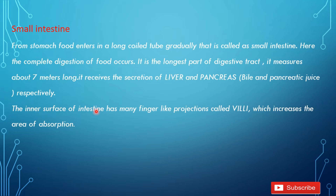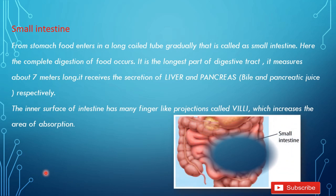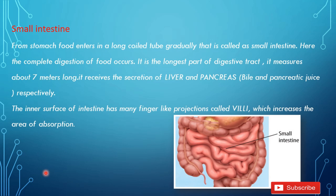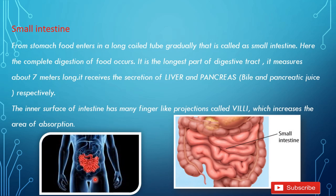The inner surface of the intestine has many finger-like projections called villi, which increase the area of absorption. Digestion completes in the small intestine because it receives two secretions from the liver and pancreas. The inner surface of the small intestine has many finger-like projections called villi, whose main purpose is the absorption of food. You can see here the position of the small intestine.